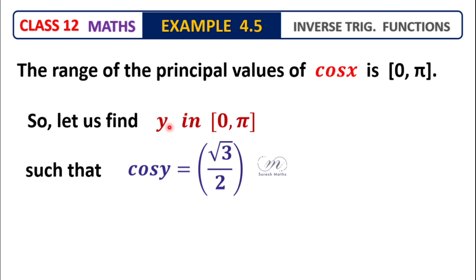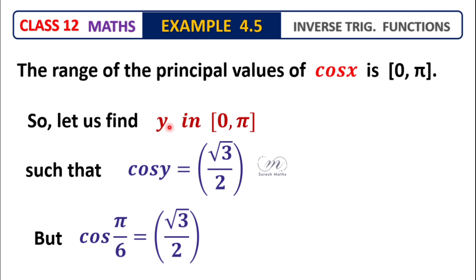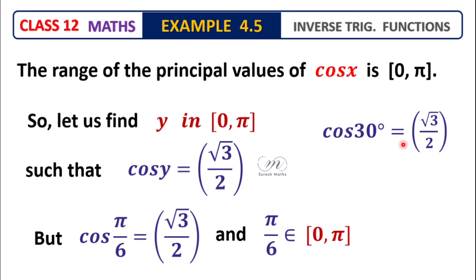Such that cos y equals root 3 by 2. Now, what radian value gives this? That is cos of pi by 6. At 30 degrees, cos 30 degrees is equal to root 3 by 2. So cos pi by 6 belongs to the interval 0 to pi, which is the 30-degree interval. That is, cos 30 degrees equals root 3 by 2, and the answer is pi by 6.